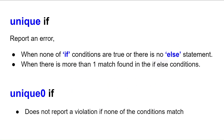The unique keyword is placed before the if statement to create a unique if construct. It evaluates all conditions in any order — there is no restriction on order. It reports an error when none of the if conditions are true and there is no else statement, or when more than one condition matches, such as when both an if and an else if condition are simultaneously true.